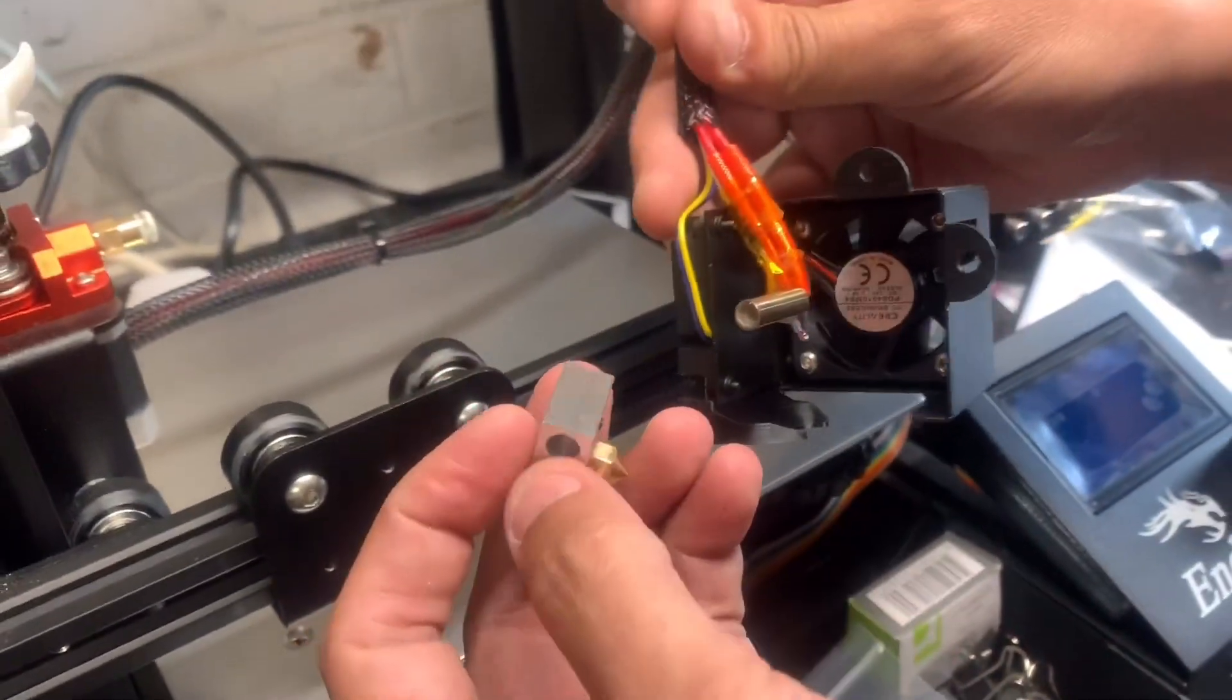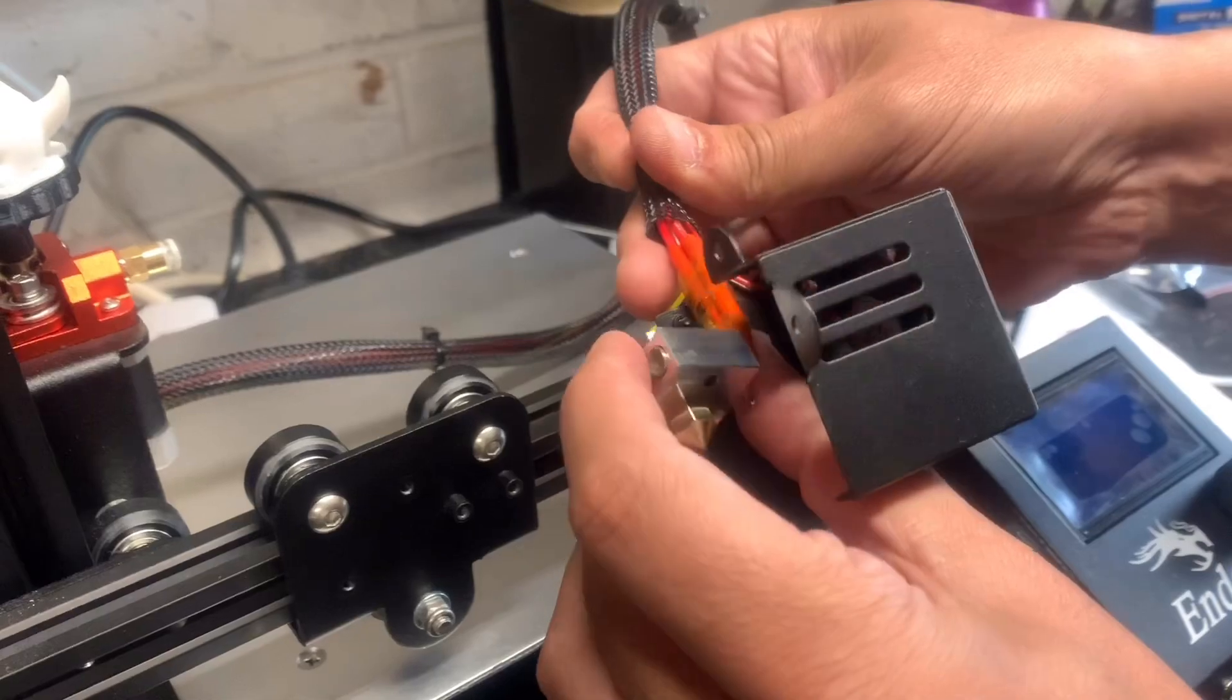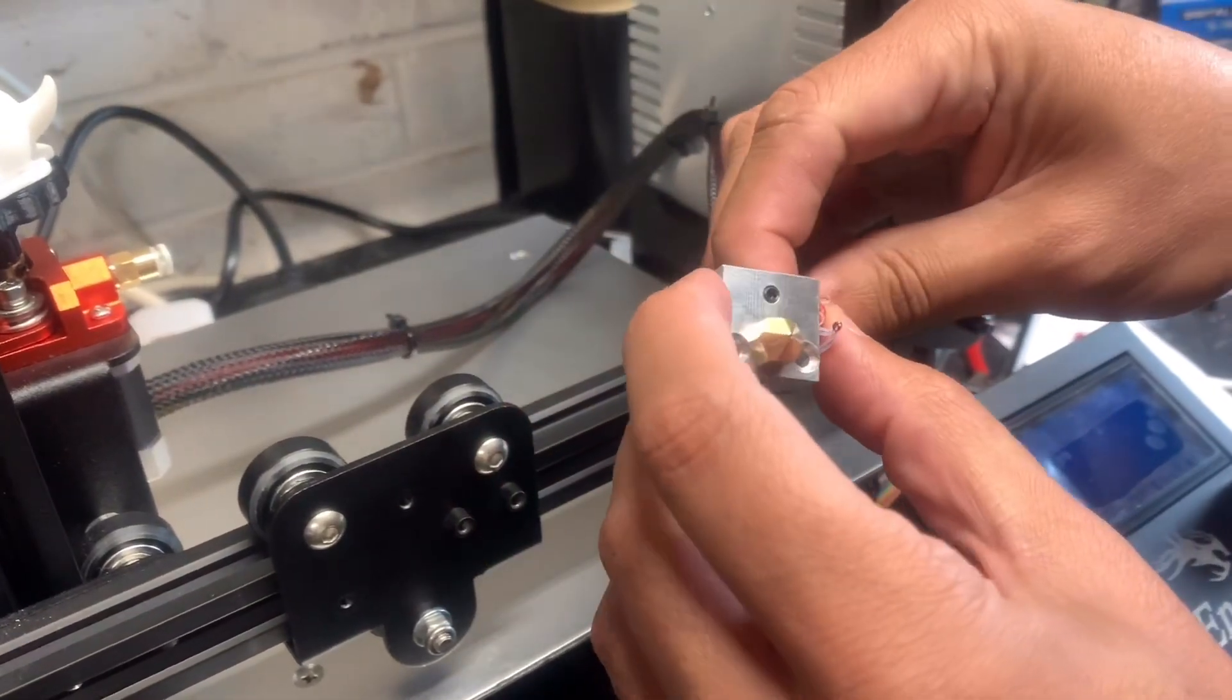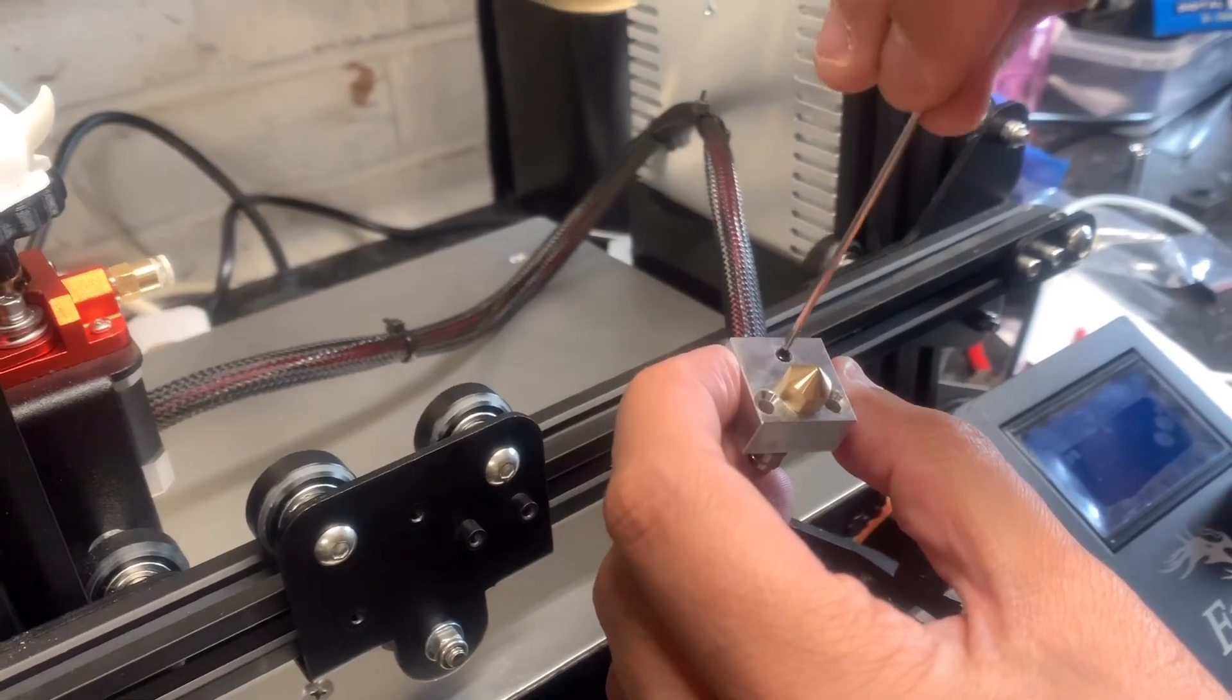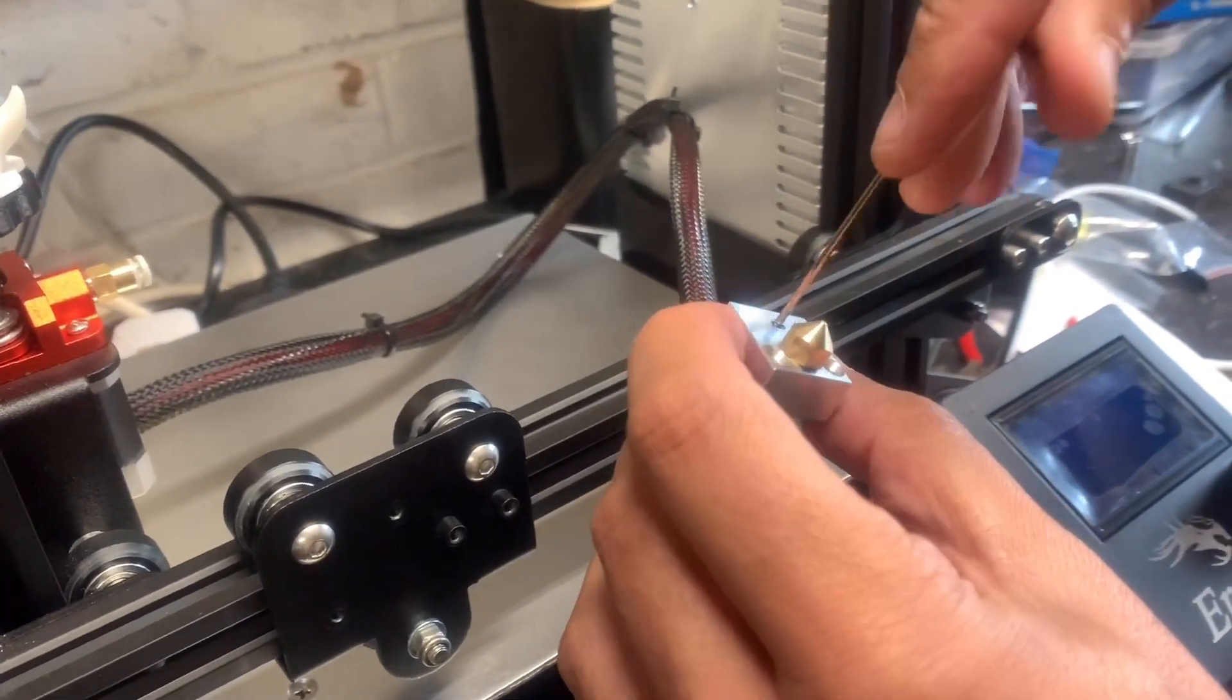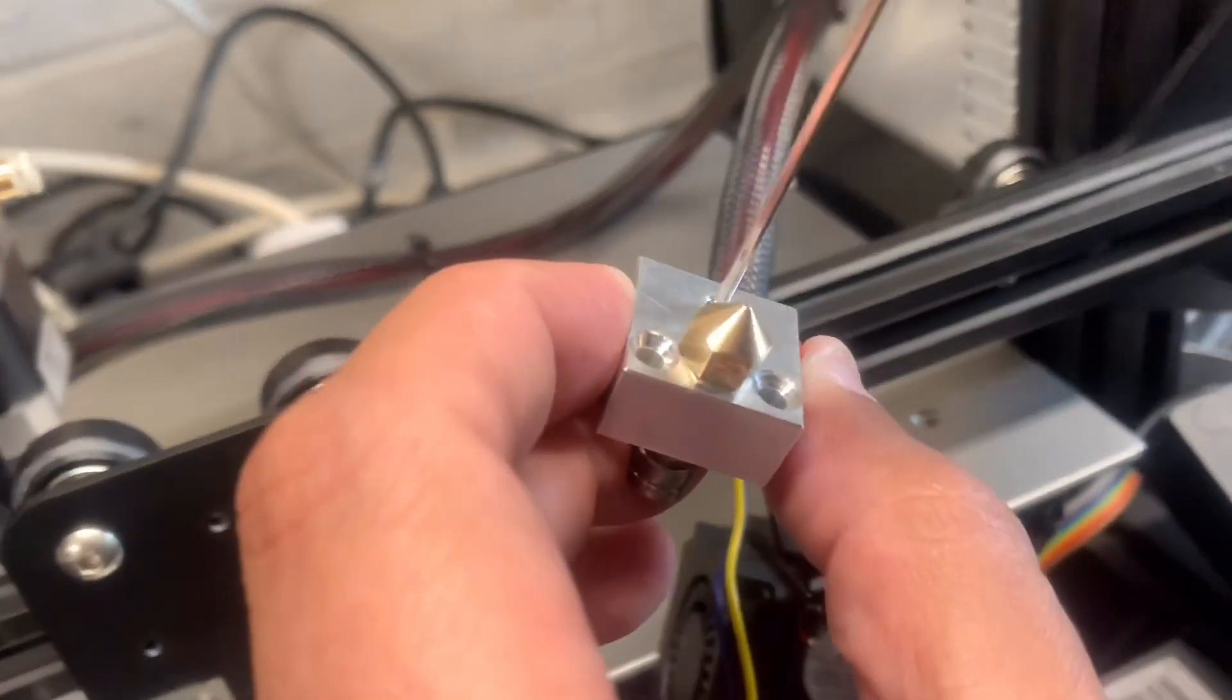What you want to do now is grab the cartridge and just slide it in. Just like that. And then you just want to screw it in with the allen key on the grub screw. You want to do it sort of tight but not too tight.